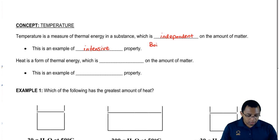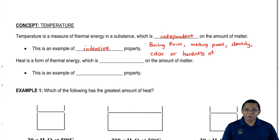Besides temperature, we can say that boiling point, melting point, density, color, or hardness of metals are all considered intensive properties. None of them are based on the amount of mass or volume that I have of a particular substance.